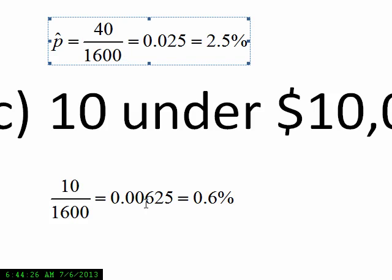Another sample might yield a small proportion of 0.0625, or 0.6%. So this would be another p-hat. Each time we take a sample, we get a proportion that defaults, and we call that p-hat. What we're asking is to take all possible samplings of 1,600 loans under $10,000 — what would all the p-hats be?